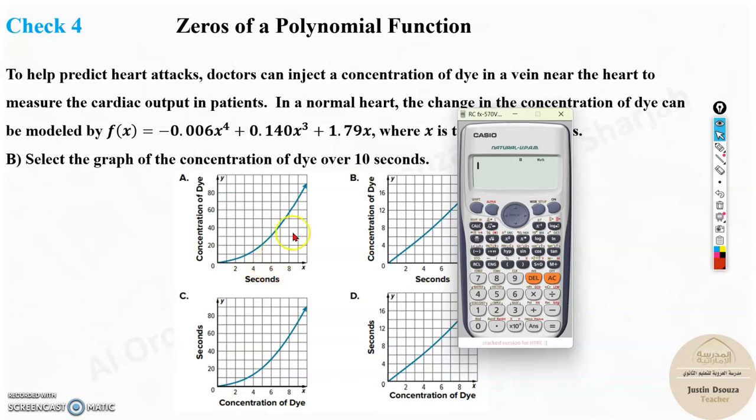It is -0.006 into x is, I'm considering as 6 to the power 4. I'm just assuming an answer from the graph, and I'm trying to check what will be the answer. Let me solve it now.